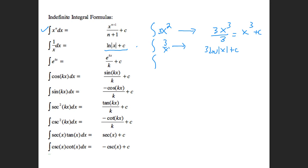E to the kx over k: so if I gave you the integral of e to the 3x, the integral of that is e to the 3x over 3. You can check yourself — if you take the derivative of this, you should get back to the original. You should be able to go forwards and backwards: take the derivative, then go back and take the integral.